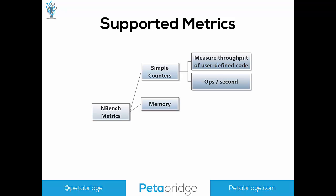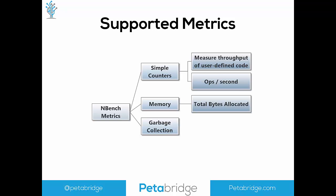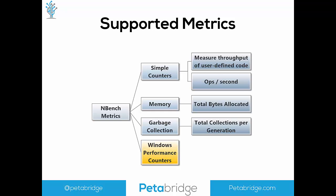Next, we have memory benchmarks. The most important metric is total bytes allocated: nBench uses the garbage collector to measure how many bytes your application is using before and immediately after the benchmark, reporting the difference. We also have garbage collection metrics — total collections per generation. Since .NET uses a multi-generation GC, a Gen 2 collection is much more expensive than Gen 0. This lets you measure collections per generation, and if writing performance-critical code, you want to reduce Gen 2 collections to zero.